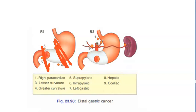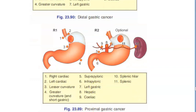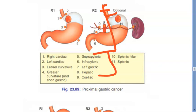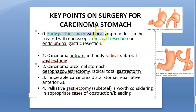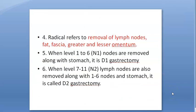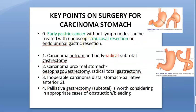For distal cancer, radical subtotal gastrectomy with Billroth II anastomosis is done. For proximal or diffuse carcinoma, esophagogastrectomy or radical total gastrectomy is performed — entire stomach gone, esophagus connected directly to jejunum. Summary: early gastric cancer → mucosal resection; antrum/body → radical subtotal gastrectomy; proximal → esophagogastrectomy/radical total gastrectomy; inoperable distal → anterior GJ or palliative gastrectomy. Radical means lymph nodes, fat, fascia, greater and lesser omentum all removed.